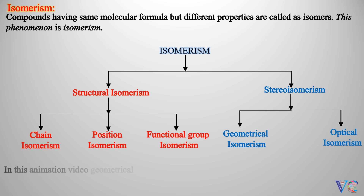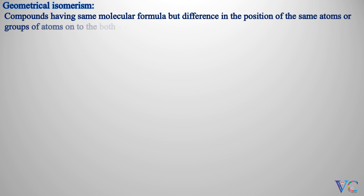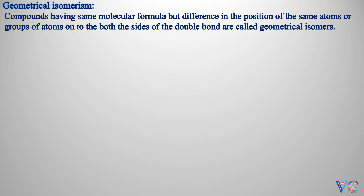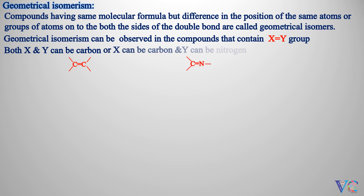In this animation video, geometrical isomerism is explained. Compounds having the same molecular formula but a difference in the position of the same atoms or groups of atoms on both sides of the double bond are called geometrical isomers. Geometrical isomerism can be observed in compounds that contain an X double bond Y group, where both X and Y can be carbon, or X can be carbon and Y can be nitrogen, or both X and Y can be nitrogen.